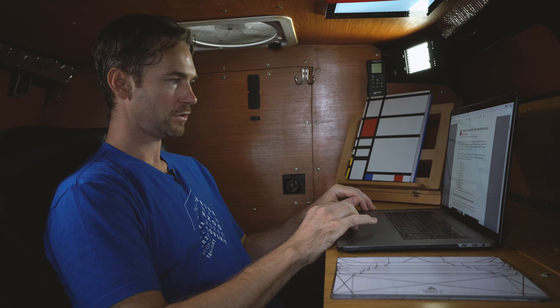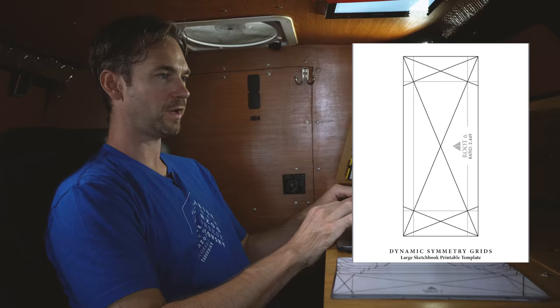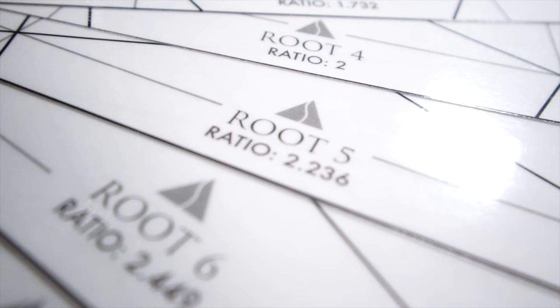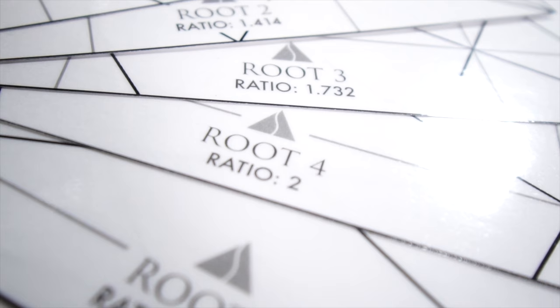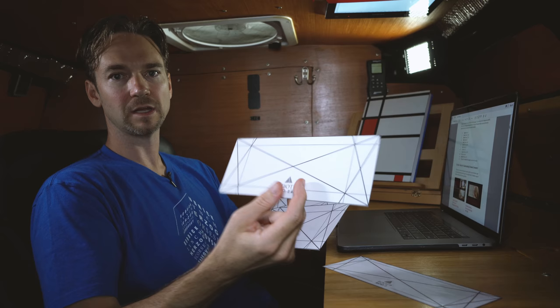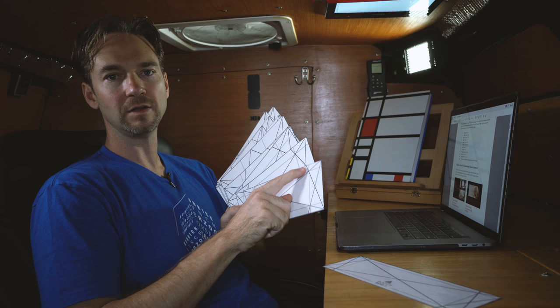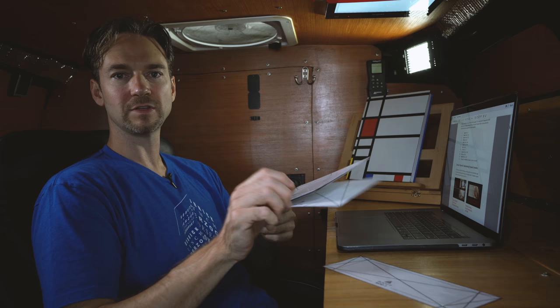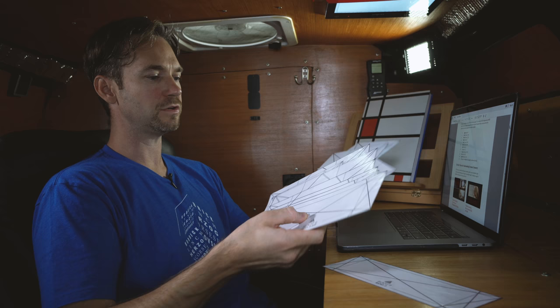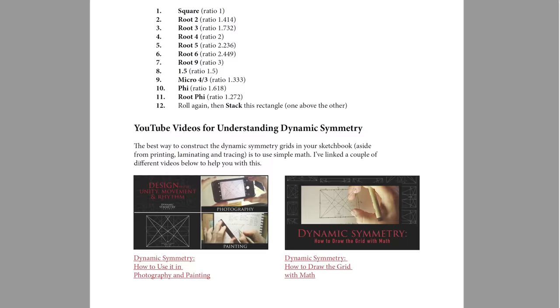There are 11 grids included in the back of the PDF for free printing, sized to a large sketchbook or small sketchbook, so you can trace them. Here are the grids I printed and laminated — square root one through root nine, and the phi rectangle grids. You just trace it in your sketchbook and use the diagonals to mark up where you need to draw your reciprocal. I've also got links for videos on understanding dynamic symmetry and how to build the grids yourself in Photoshop.